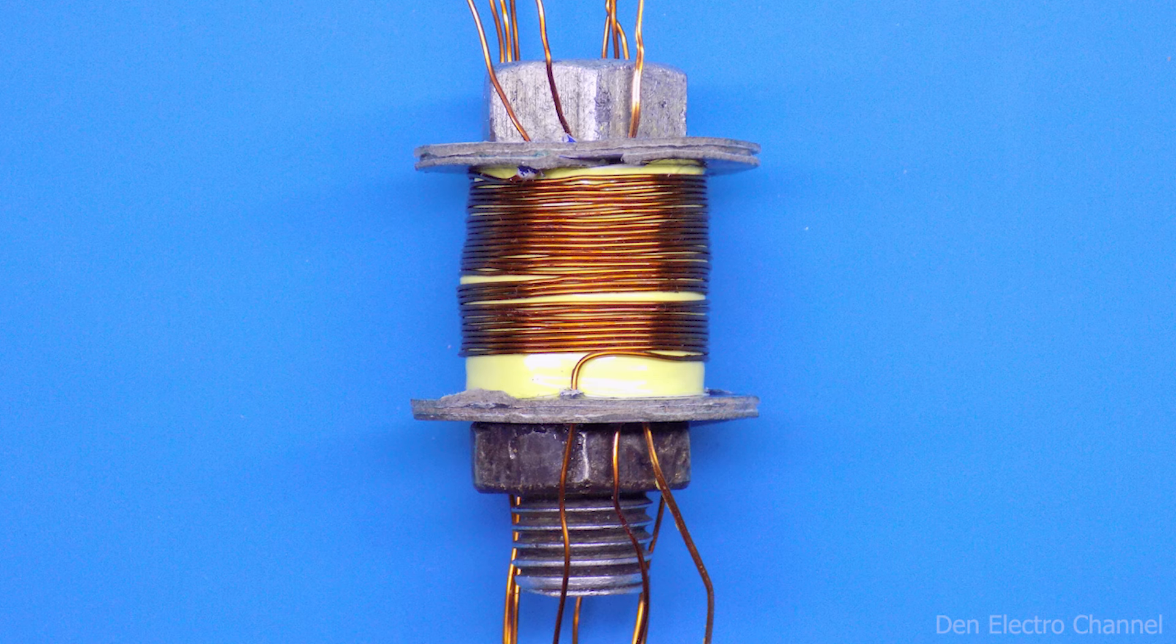This will be the second half of the primary winding, all turns wind in the same direction. There are also 27 turns here. When the wire comes out on the right side, push it down.